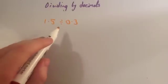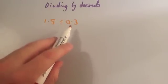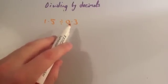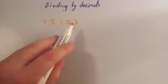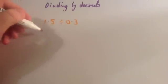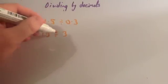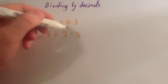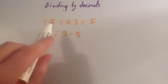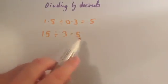We're going to do 1.5 divided by 0.3. It's really just the number you're dividing by that you want to make a whole number. So we want to make this 3. If we times 0.3 by 10, this would become 3. So let's times both of them by 10. If we times 1.5 by 10, we get 15, and we times 0.3 by 10, we get 3. 15 divided by 3 is 5. Therefore our answer is 5. We just times both of them by 10 to make this one a whole number, then do the division really easily and get 5.